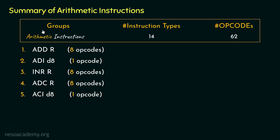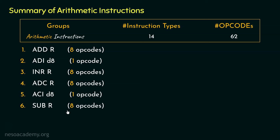The next type, covering subtraction instructions, was SUBR. Here we subtract the content of R — which can be the accumulator, all GPRs, or the memory location pointed by the HL register pair — from the content of the accumulator. So for this instruction type, we have 8 different opcodes.